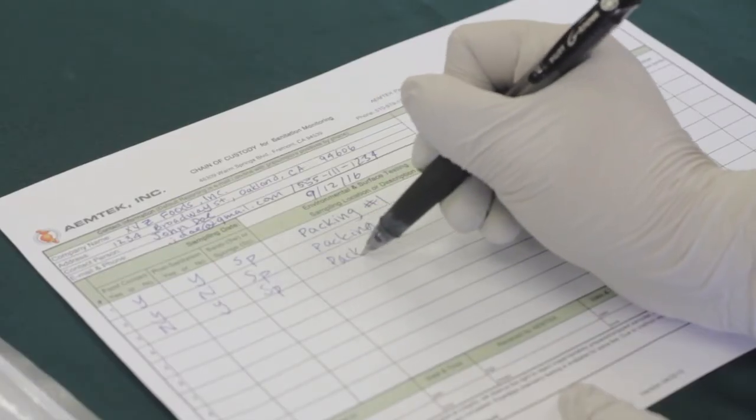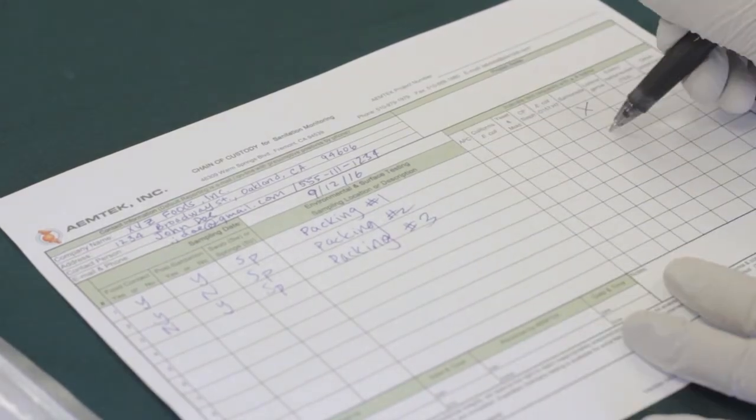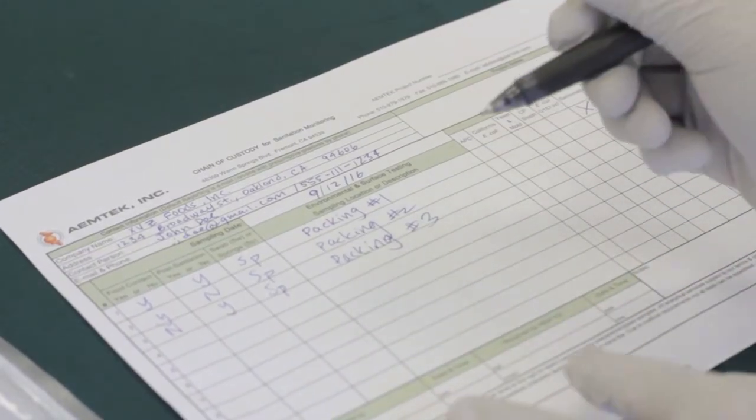Record the sample information on your sample submission form or chain of custody form. Make sure to check off what type of testing you would like the lab to perform on the sample.